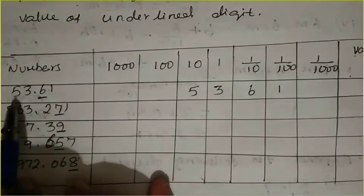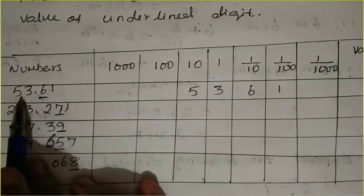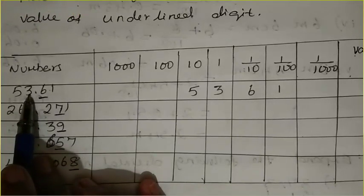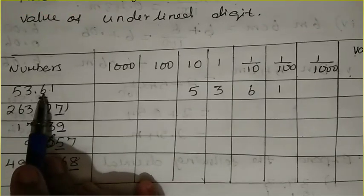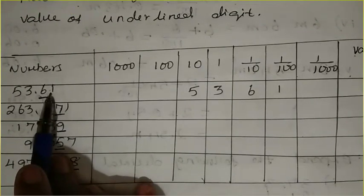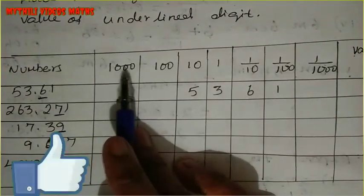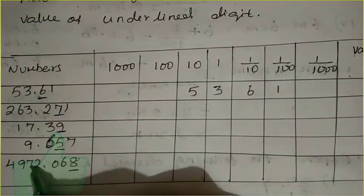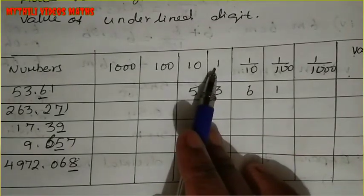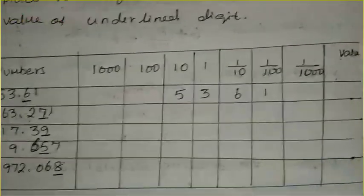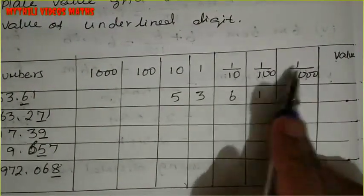So, if you have 53.61 — the decimal point separates the whole number part from the decimal part. Before the point we have the ones place and tens place; after the point we have the tenths (1/10) and hundredths (1/100) places. The place values are: 1000, 100, 10, 1, decimal point, 1/10, 1/100, 1/1000.